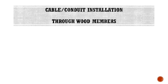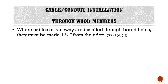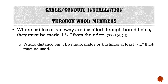Where cables or raceways are installed through bored holes — meaning drilled holes — in framing members, the hole must be made so the outside edge is at least one and a quarter inches from the edge of the member. In a residential building, for example, when drilling holes through 2x4 stud framing to run cables, the hole needs to be drilled so that one and a quarter inches of material remains between the hole edge and the stud edge — typically requiring the hole to be centered in the stud. Where that distance cannot be maintained, plates or bushings at least one-sixteenth inch thick must be used.